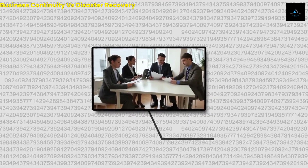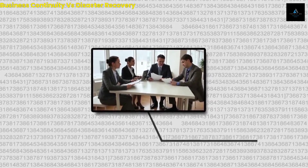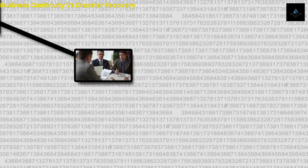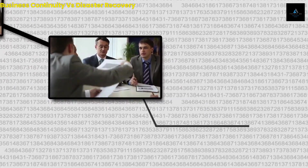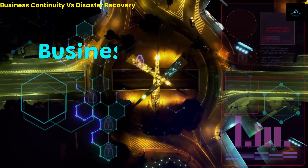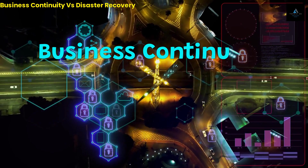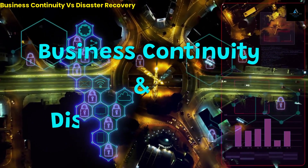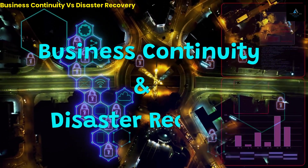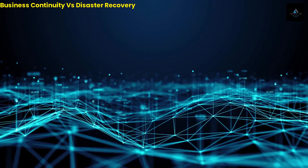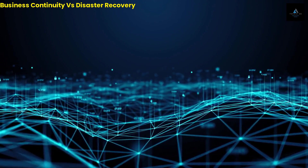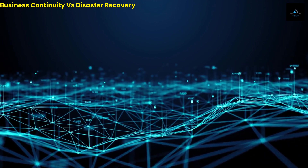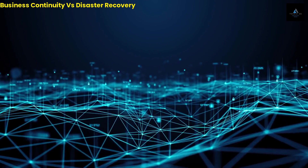In today's unpredictable world, businesses must be prepared for unforeseen events that could disrupt their operations. Two critical components of business planning are disaster recovery and business continuity. In this video, we will discuss both BC and DR and will also understand the difference between both terms.